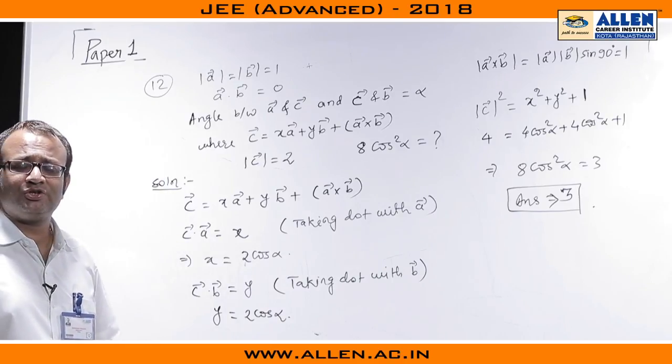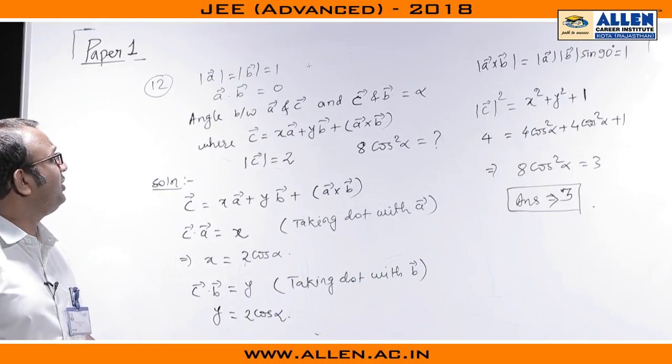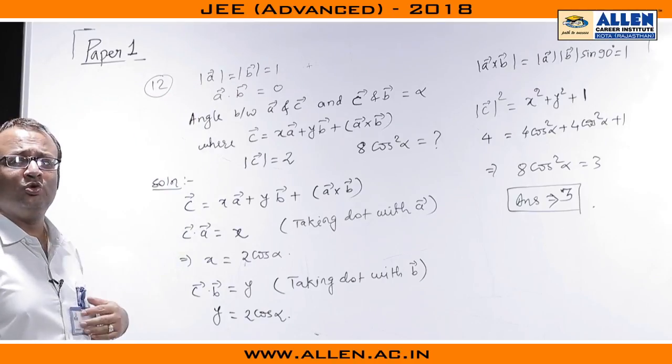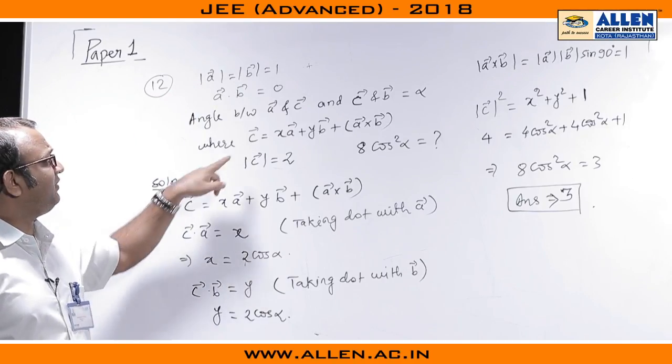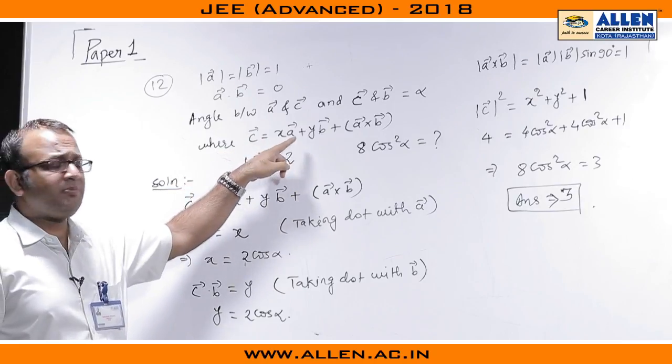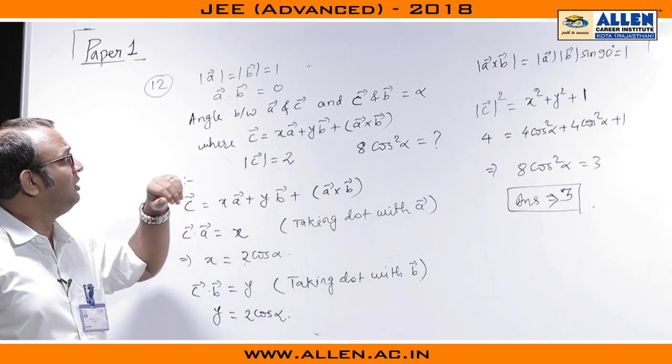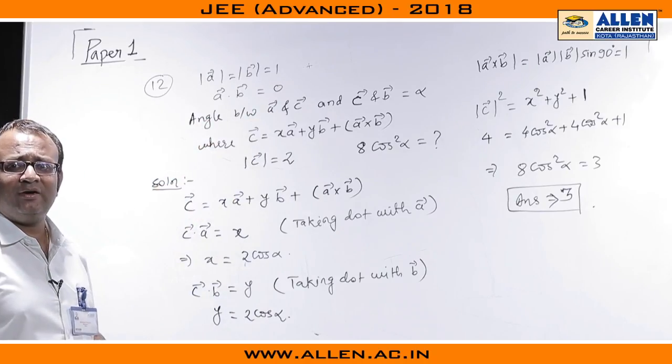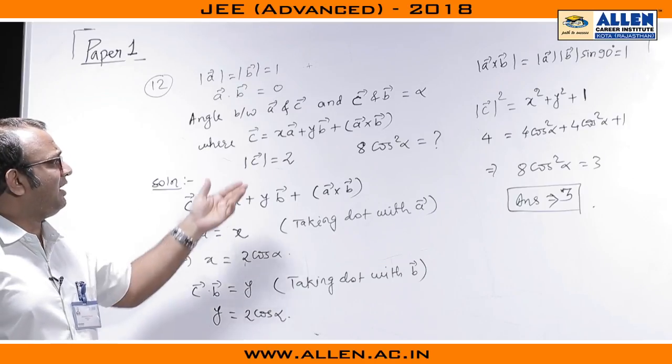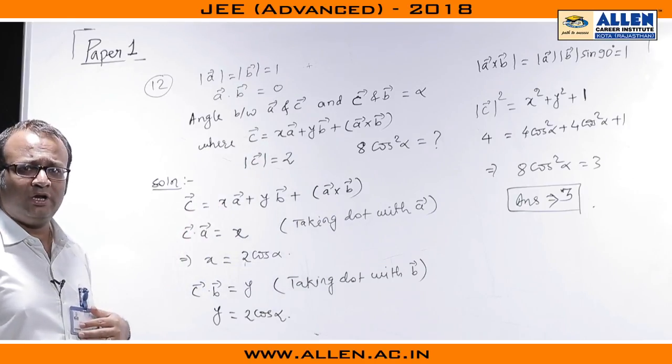This is question number 12, this question is on vectors. In this particular problem A and B are two unit vectors which are mutually perpendicular to each other and then there is a vector C given which is of the form X A plus Y B plus A cross B. Vector C is given to be inclined at an angle of alpha with both vectors A and vector B, and we are then asked to find the value of 8 cos squared alpha.